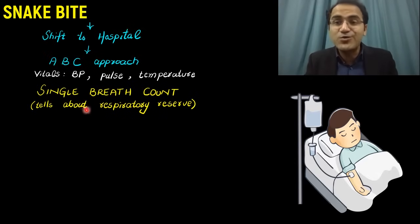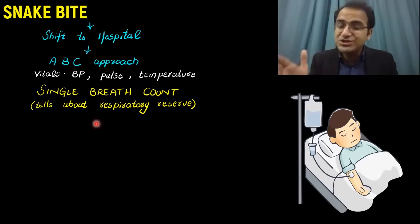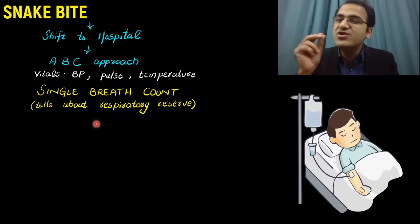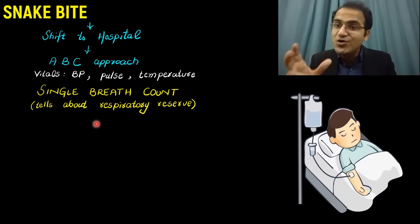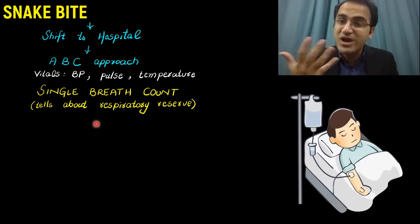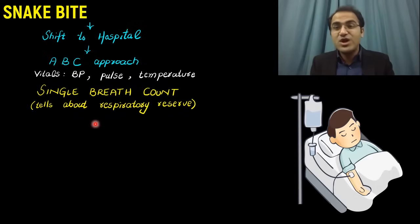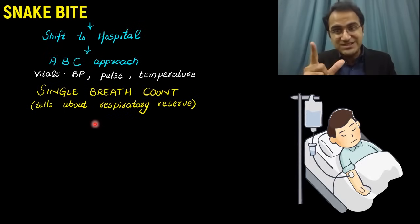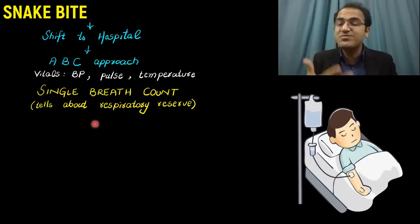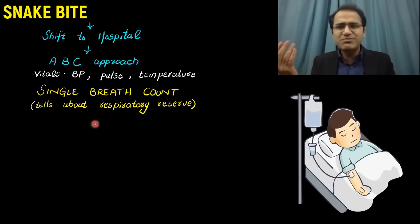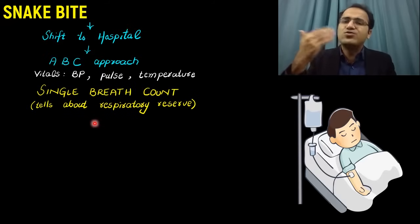Single breath count tells us about the respiratory reserves. Many patients are bitten by snakes that have neurotoxins, which can cause respiratory paralysis. That respiratory paralysis would decrease respiratory reserve, and these patients will need a ventilator. To assess this, ask the patient to take a single breath and count up to 30.